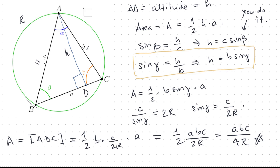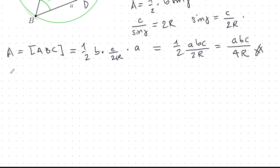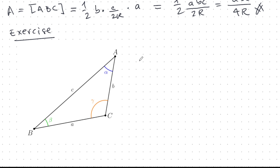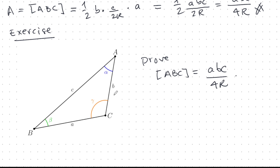For an obtuse triangle, the altitude H falls outside the triangle, so the geometry is slightly different. As an exercise, I want you to take an obtuse triangle and repeat the same calculation to prove that the area is still abc/4R — it's your job to work through the details.